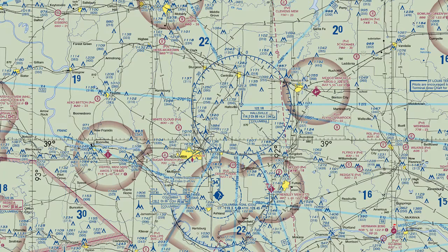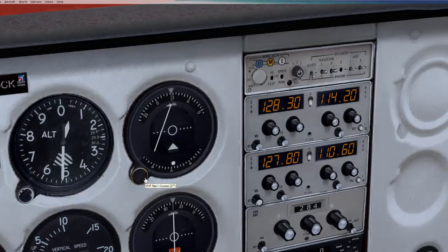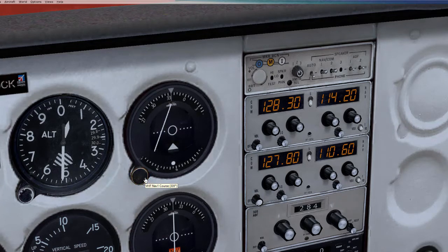In this example I will be taking off from Herman Airport. Instead of just flying directly to the Hullsville VOR, I am going to intercept a 335 degree course. In order to do this I'm going to rotate the OBS knob to 335 degrees. If I don't set the OBS knob to the right course I will be flying the wrong course, so it's important to get that right.